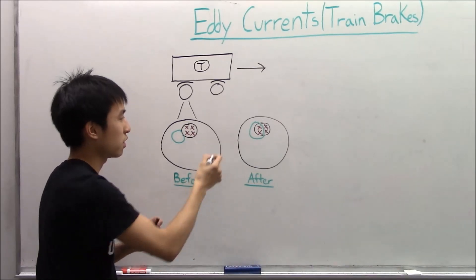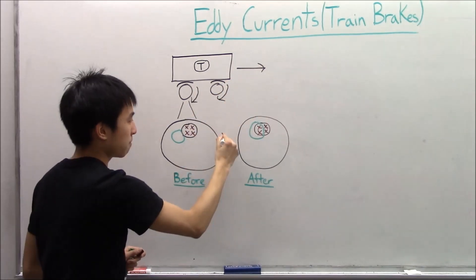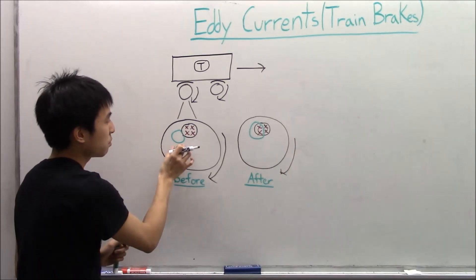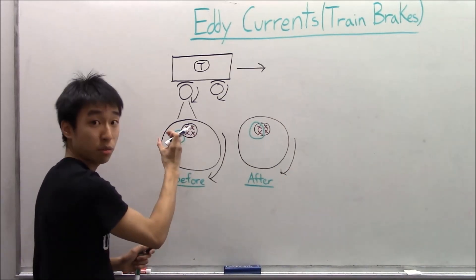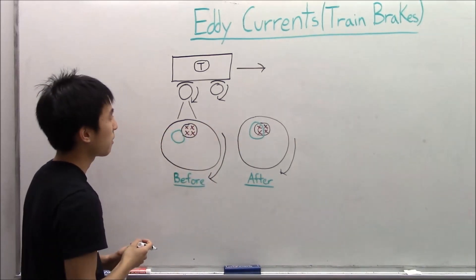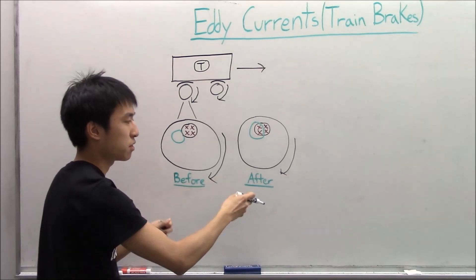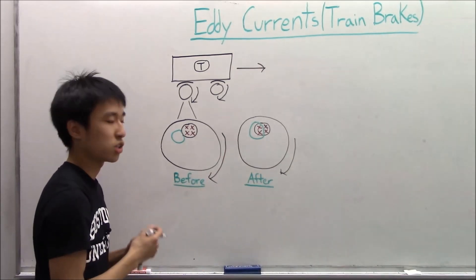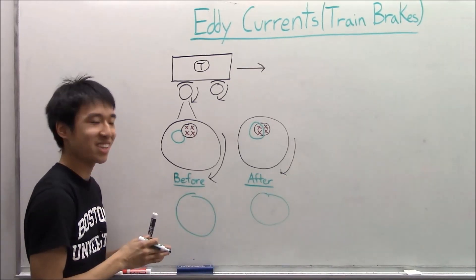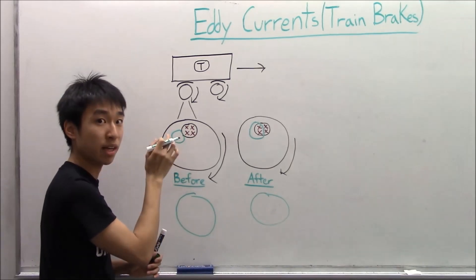The wheels are initially spinning in this direction, so the train is going over there. The green circle you see over here is just a portion of the wheel before it enters the magnetic field region and after. So what we need to do is a before, after, and opposing analysis for the currents that are generated — or the field lines. We're going to analyze the green circle portion of the wheel as it enters the magnetic field region.